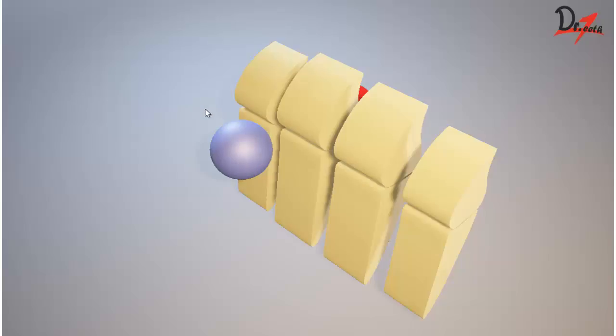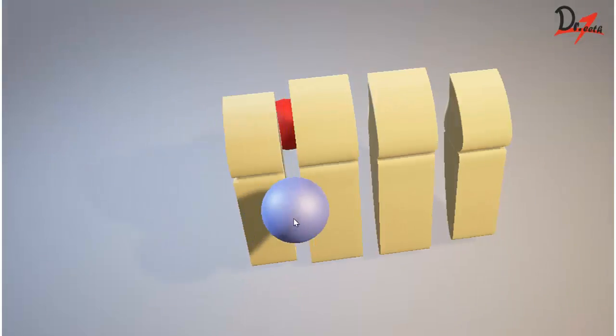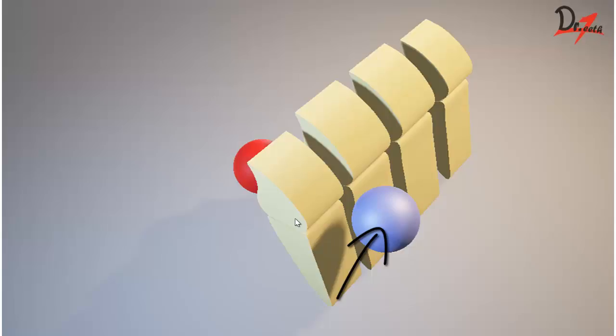That red object is moving mesially towards this midline. Now if we move the tube head distally, when we take the second radiograph, the object seems to have moved in the same direction as the direction of the PID. That means the object is lingually positioned.